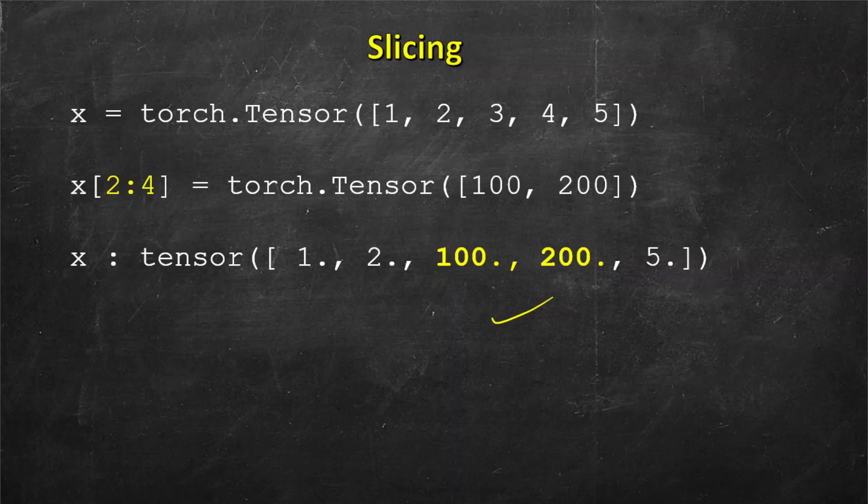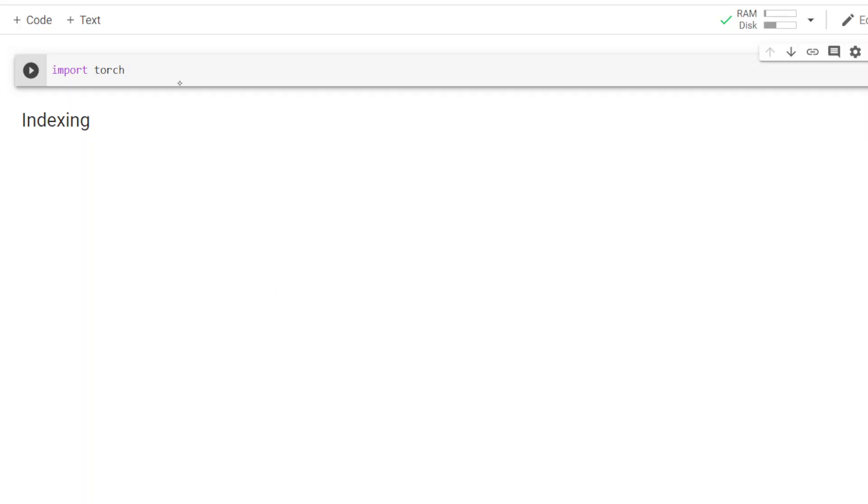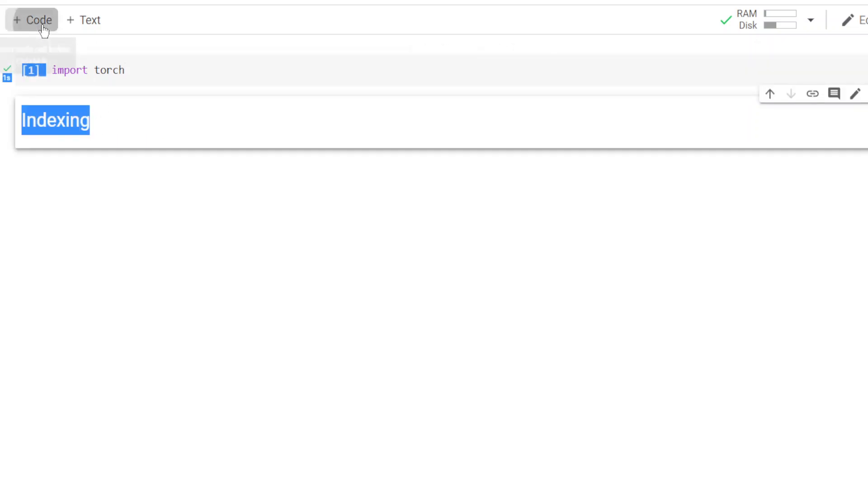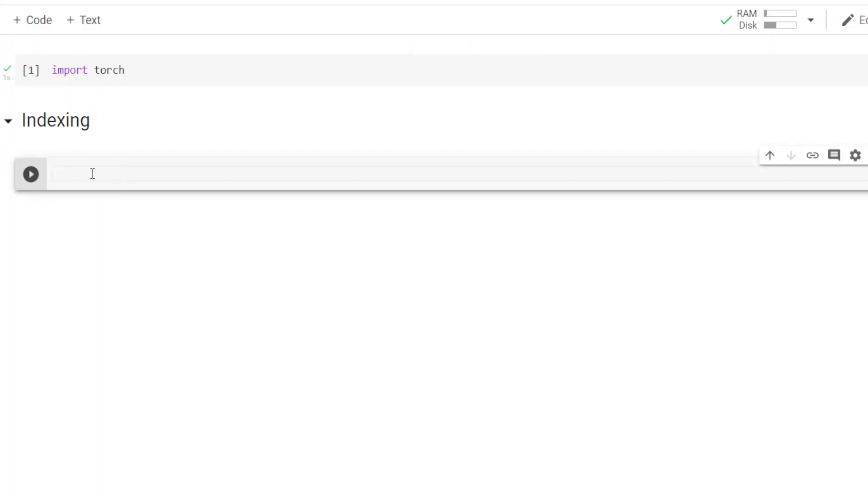So now let's see an example of this in Google Colab notebook. First we will need to import torch.